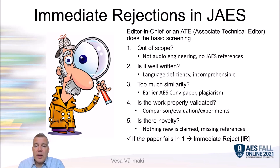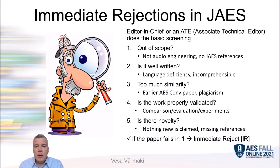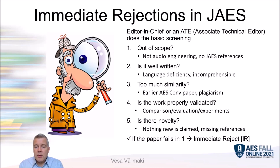If you submit a paper related to a new method but there have been previous methods to solve the same problem, the paper should compare the new method with those previous solutions and show some advantages. It's very common that audio engineering papers require some comparison or experiments to show results, and if that's missing it can be a reason for rejection. Finally, novelty is required from all scientific research. If nothing new is claimed, or if previous publications on the same topic have not been cited, we can also reject the paper.